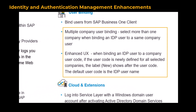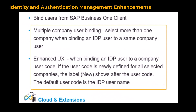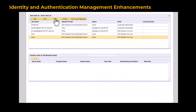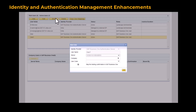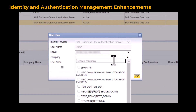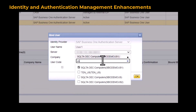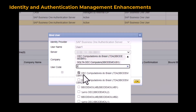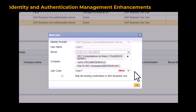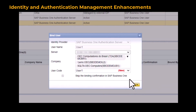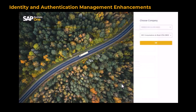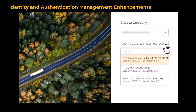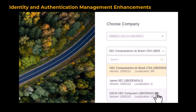You can now select more than one company with enhanced UX when binding an IDP user to a company user. If the user code is newly defined for all selected companies, the label 'New' appears after the user code. After binding to multiple companies in one go, you can then choose from multiple companies.